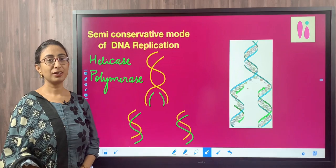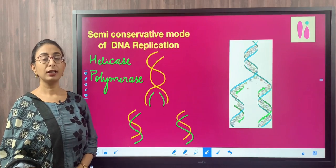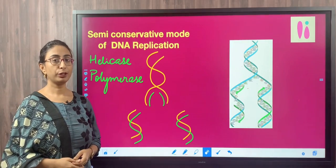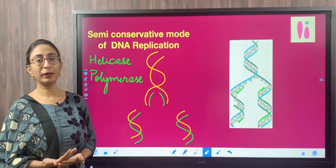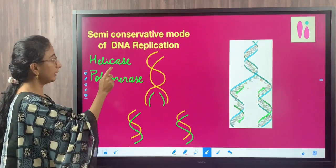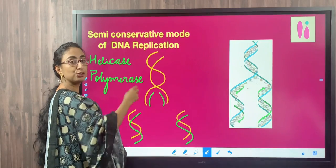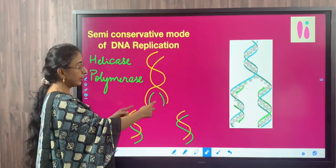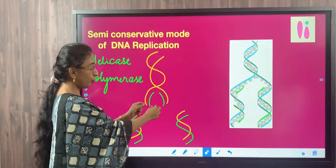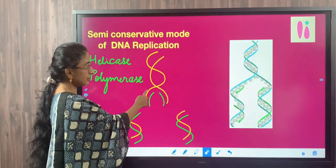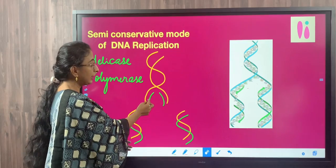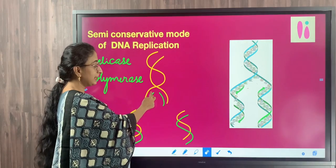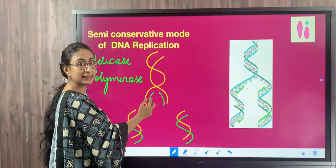DNA replication is the process by which a DNA molecule is copied to produce two identical DNA molecules — it is just like making a photocopy. The first step in DNA replication is the unwinding of the double-stranded DNA molecule. On one end, the double-stranded DNA starts uncoiling or unwinding, and as that process happens, new nucleotides are added and a new strand of DNA is synthesized.